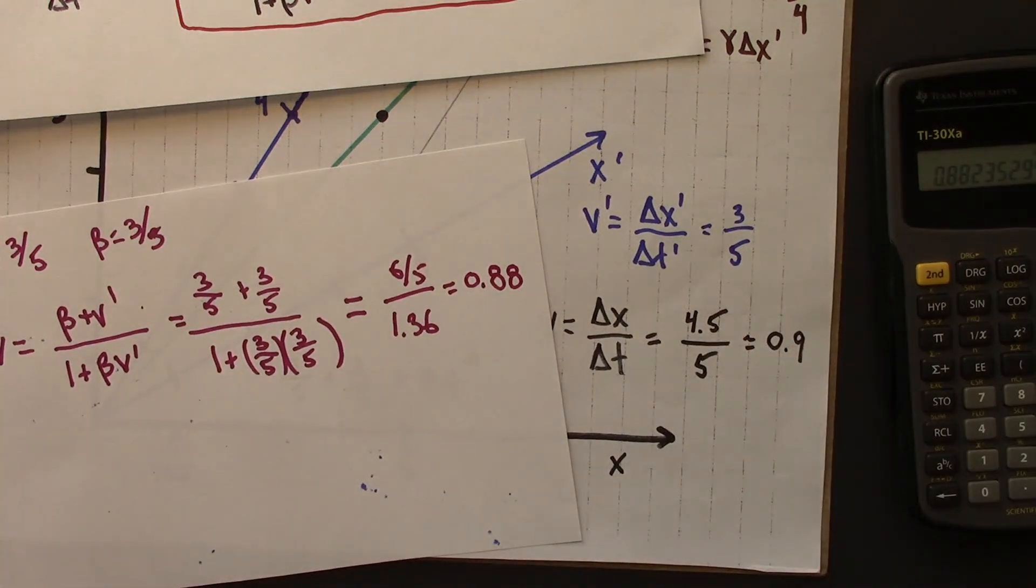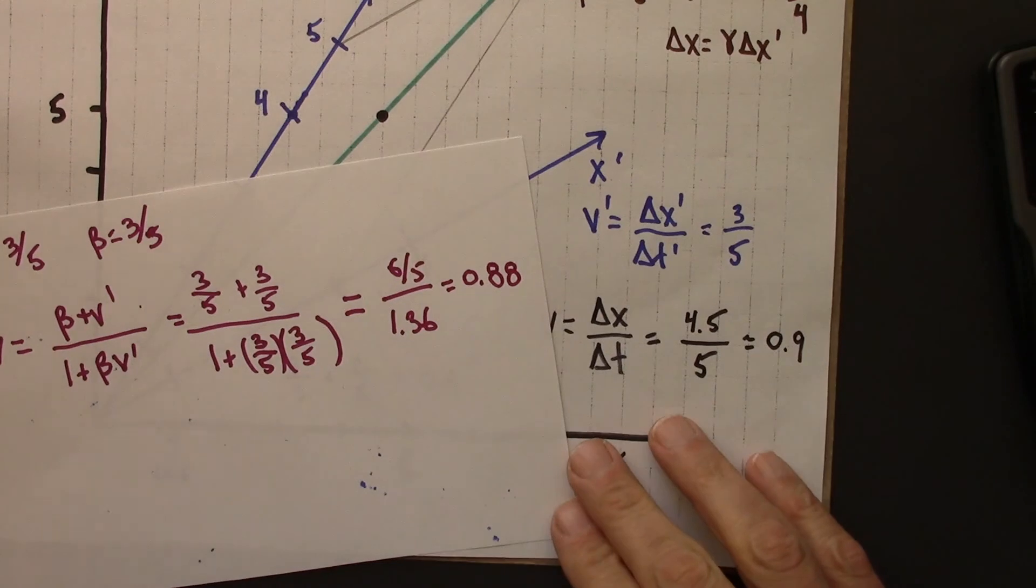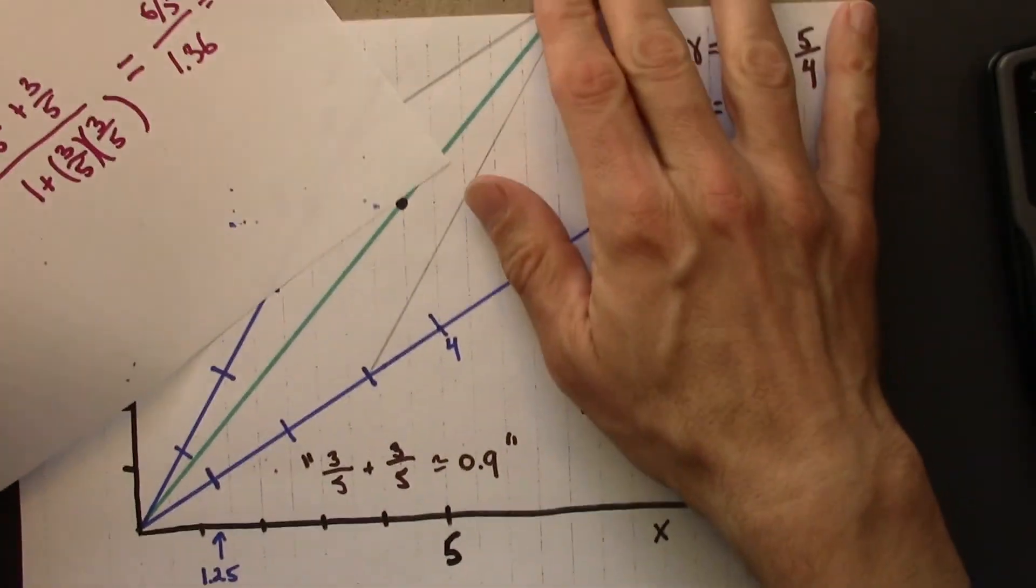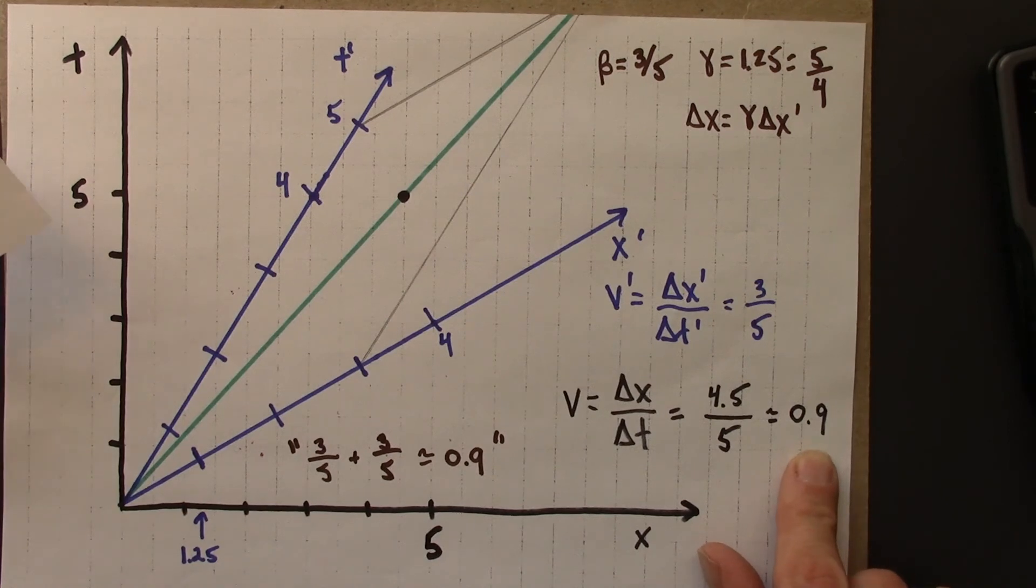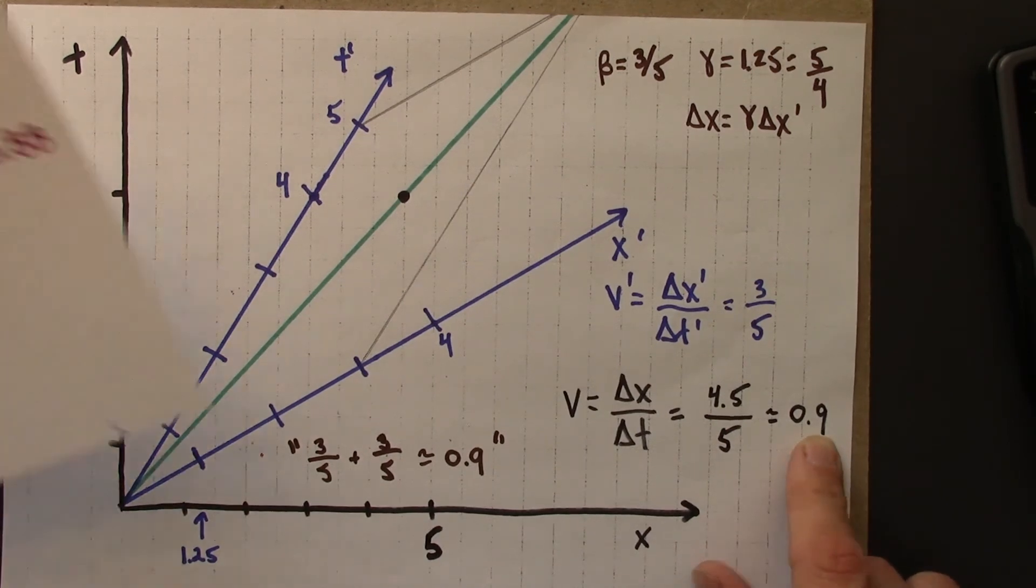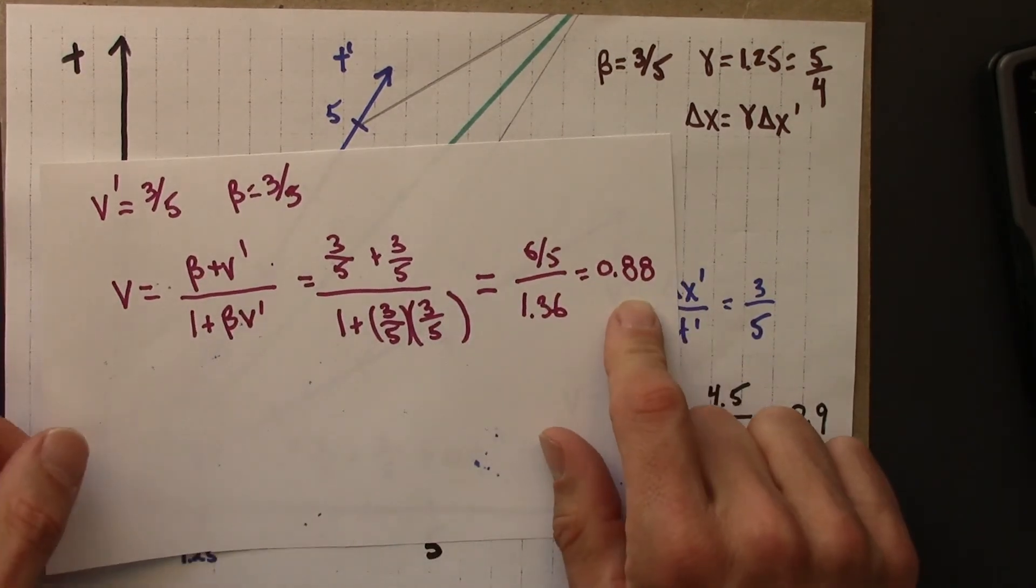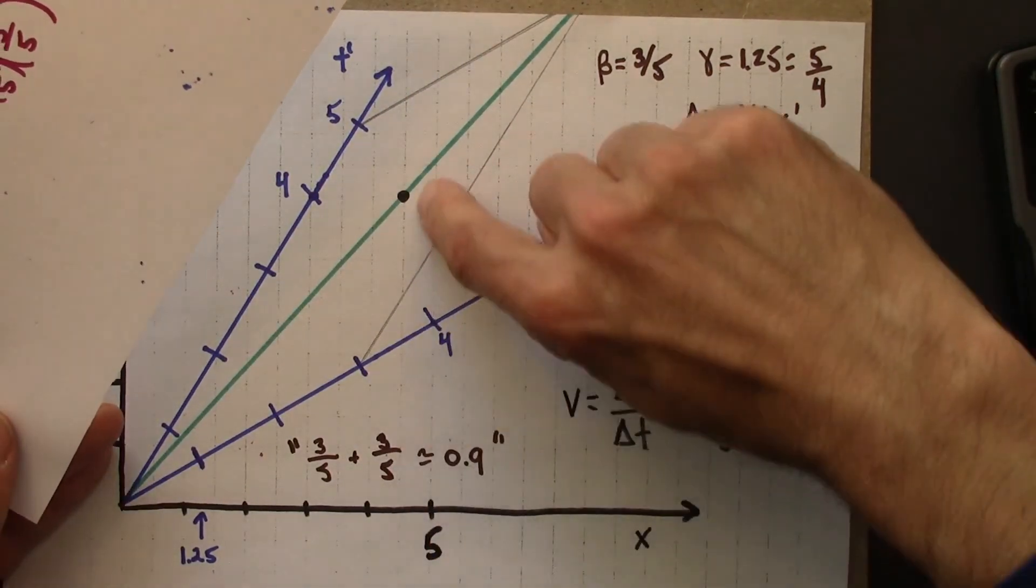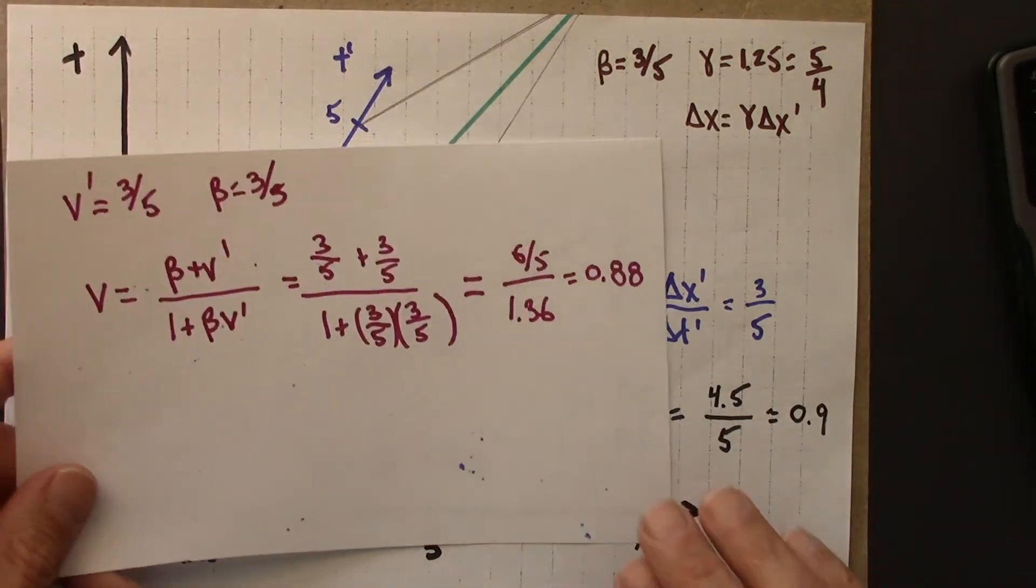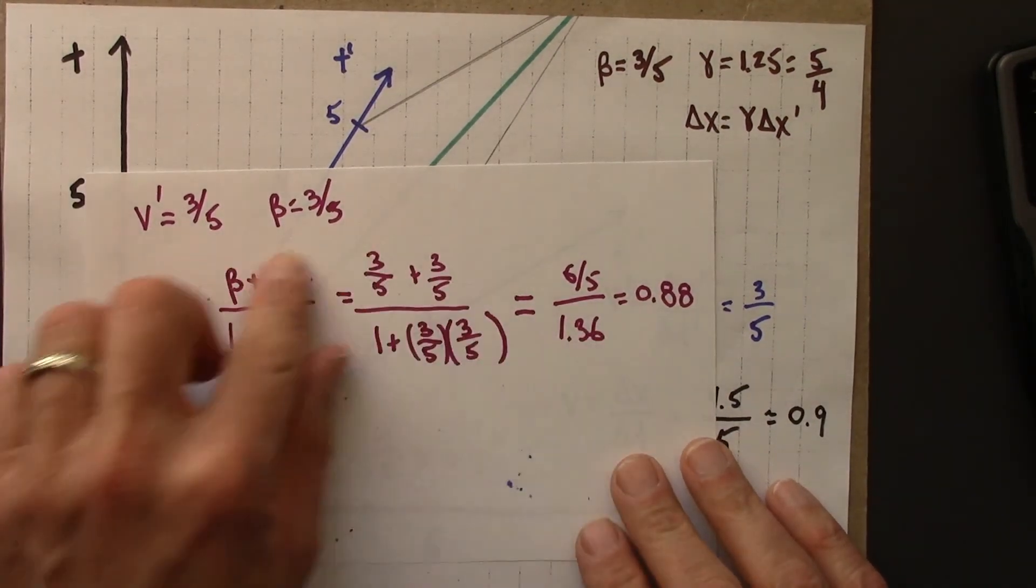Alright, well let's see. The graphical version here gave us a v of about 0.9. So the graphical version is pretty close. This would be a more exact value because we weren't estimating where these lines hit and so on.